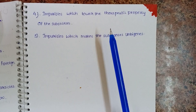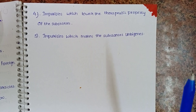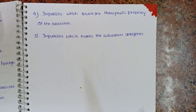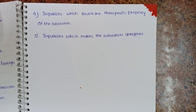The fourth type is impurities which lower the therapeutic property of the substance. Therapeutic activity is the action of the drug — its proper function to eradicate disease. So impurities reduce this action of the drug with respect to the body organs.